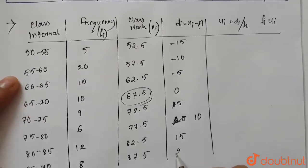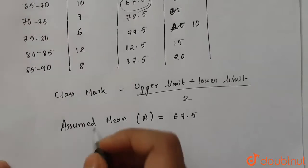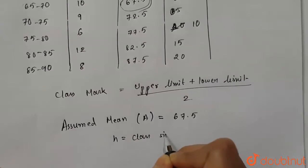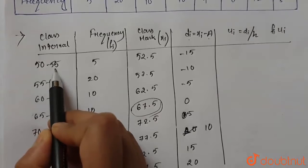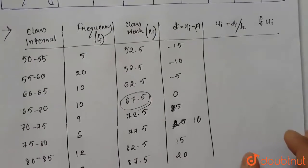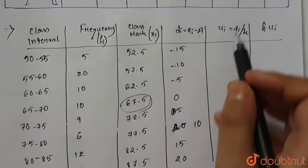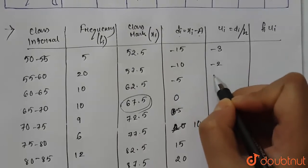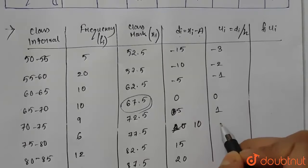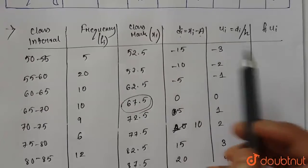For ui = di / h, h is our class size. Since the class range is 50 to 55, h = 5. Dividing each di by 5, the ui values are: −3, −2, −1, 0, 1, 2, 3, and 4.